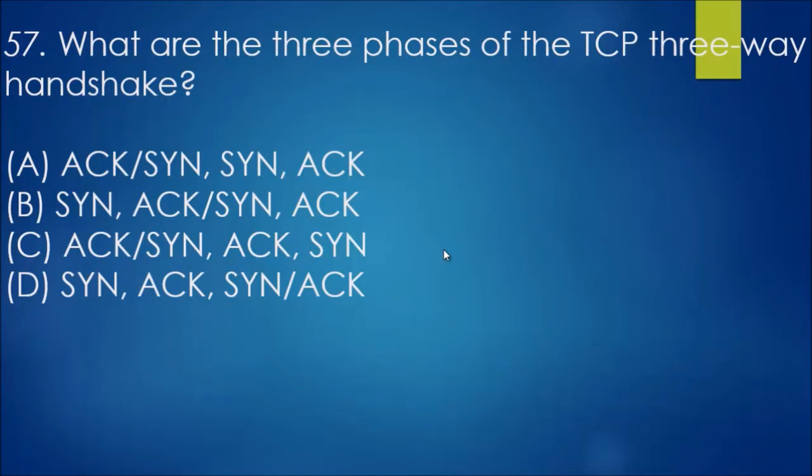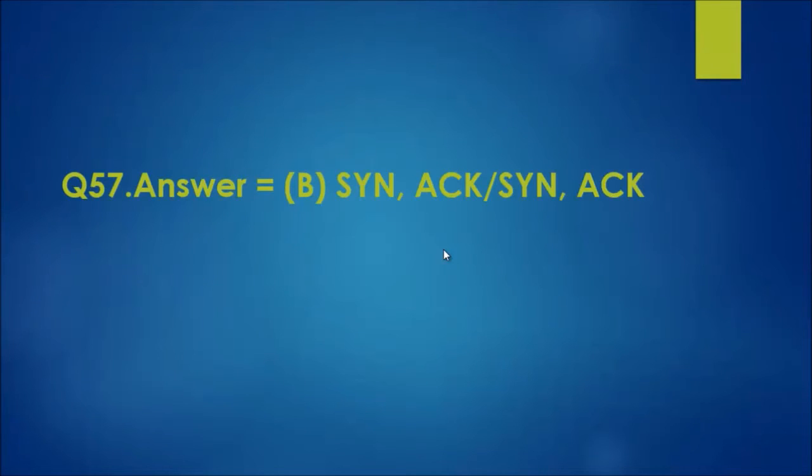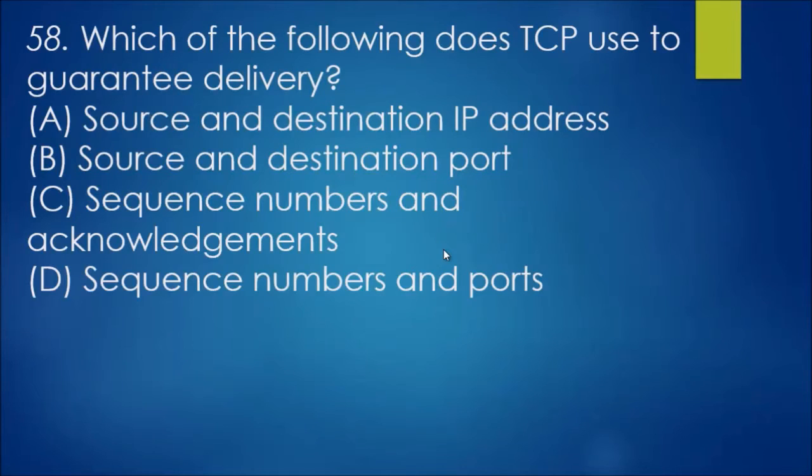Question 57: What are the three phases of TCP three-way handshake? When there's an initial connection, there's got to be certain processes to take place in order for communication to get underway. This is just a rote one to learn, it is B: SYN, ACK/SYN, ACK. Computer A to computer B, computer B sends a message of acknowledgement, and then computer A sends acknowledgement of B's acknowledgement.